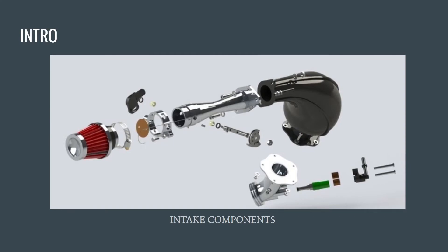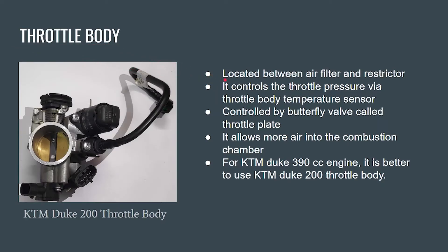The throttle body is located between the air filter and the restrictor. It contains a throttle system which controls the air flow, helping to regulate the air-fuel mixture ratio required to ignite the engine. The throttle pressure is regulated by the throttle body temperature sensor, which measures the temperature of the air-fuel mixture entering the fuel injection system to help spark ignitions generate the most fuel efficiency. Air flow is regulated by the driver via the acceleration pedal, which opens and closes the butterfly valve — also called the throttle plate — allowing more air into the combustion chamber, increasing RPM and power output.